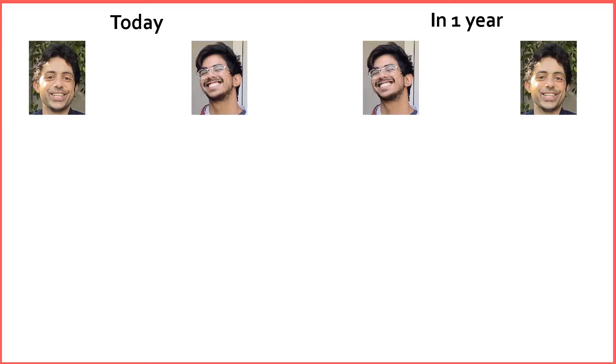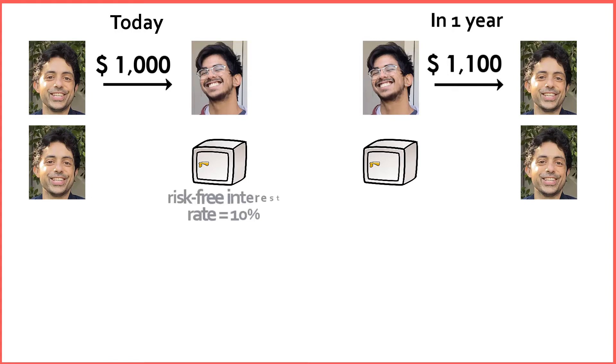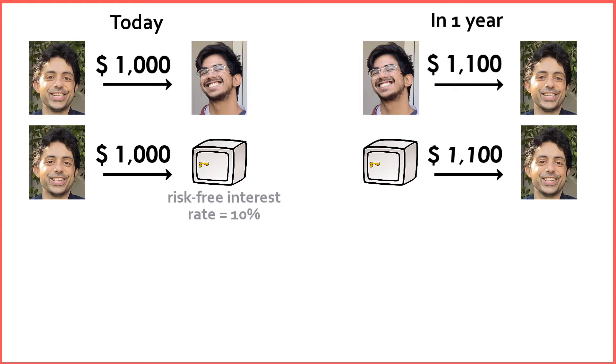Let's do an example. My friend Chai here wants to borrow $1,000 so he can buy a scooter — a Razor scooter. He offers to pay me an extra $100 in a year, that is, he's going to pay me $1,100 in one year for me to lend him $1,000 now. So the question is, should I lend this money to him? Currently the risk-free interest rate is 10%, meaning if I invest my $1,000, I can make $1,100 at the end of the year.